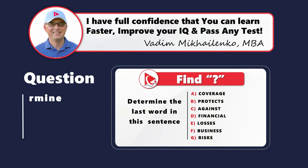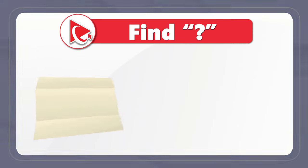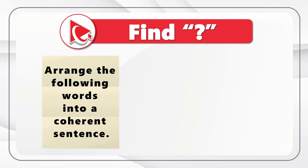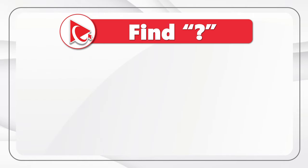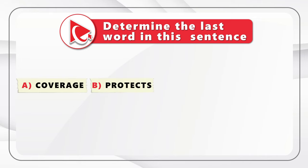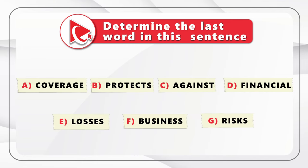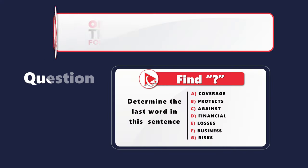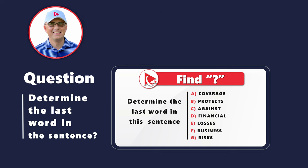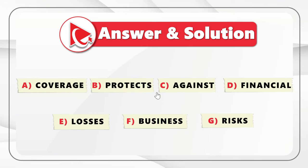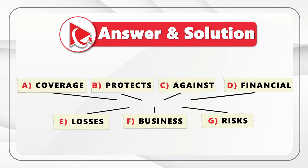Here's an amazing question to test your verbal reasoning and analytical skills. You need to arrange the words into a coherent sentence and determine the last word in this sentence. Take a close look to see if you can build this sentence and determine the last word. To get to the correct answer, let's look at each word in this sentence to determine its meaning and how to use it correctly. We start with the words 'coverage,' 'business,' and 'risks' - these are not the objects of the sentence. We also look at 'against' and 'financial' - these are prepositions and adjectives.